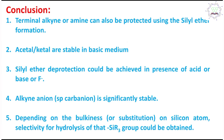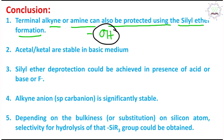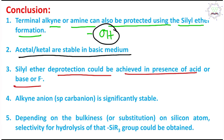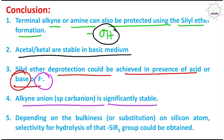In conclusion: terminal alkynes and amines can also be protected using silyl ether formation, not just alcohols — though alcohol protection is the most famous application. Acetals and ketals are stable in basic medium. Silyl ether deprotection can be achieved by acid, base, or fluoride. The mildest is fluoride-mediated, because the Si–F bond is significantly stronger — the same driving force as Si–O bond formation. The sp carbanion is stabilized by enhanced s-character.